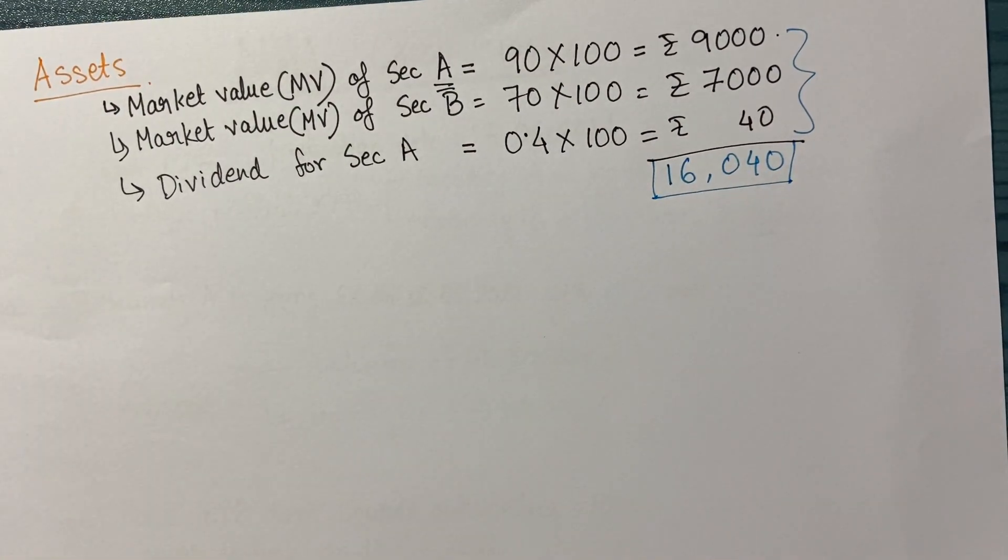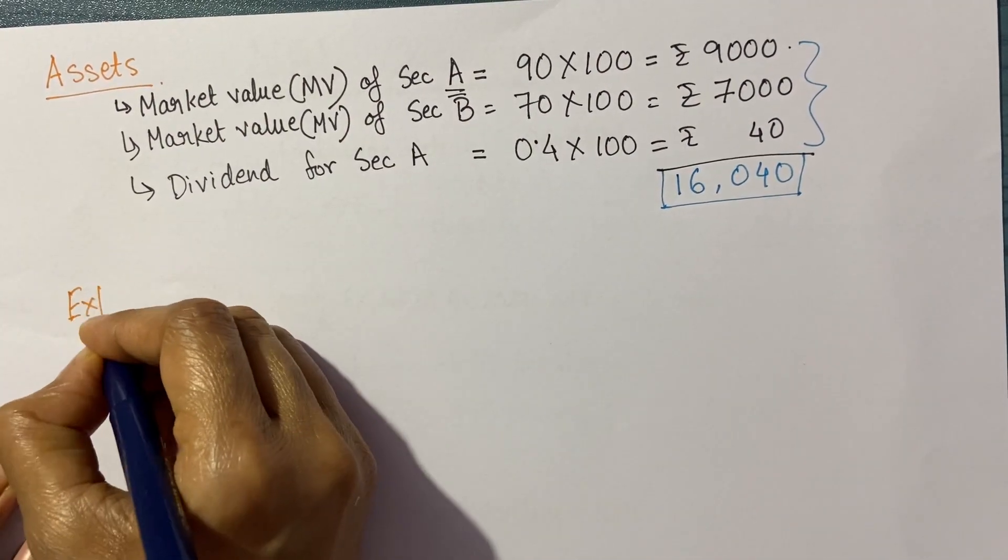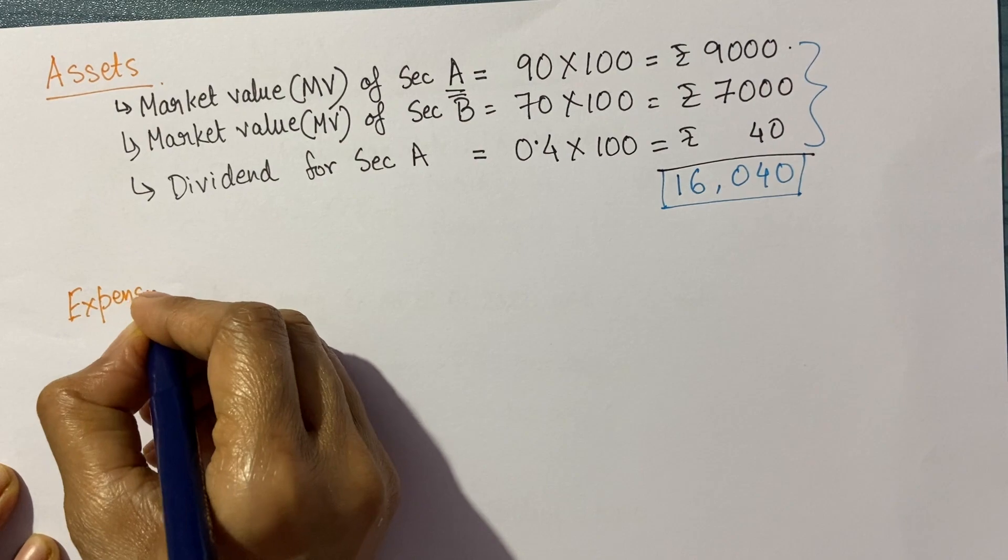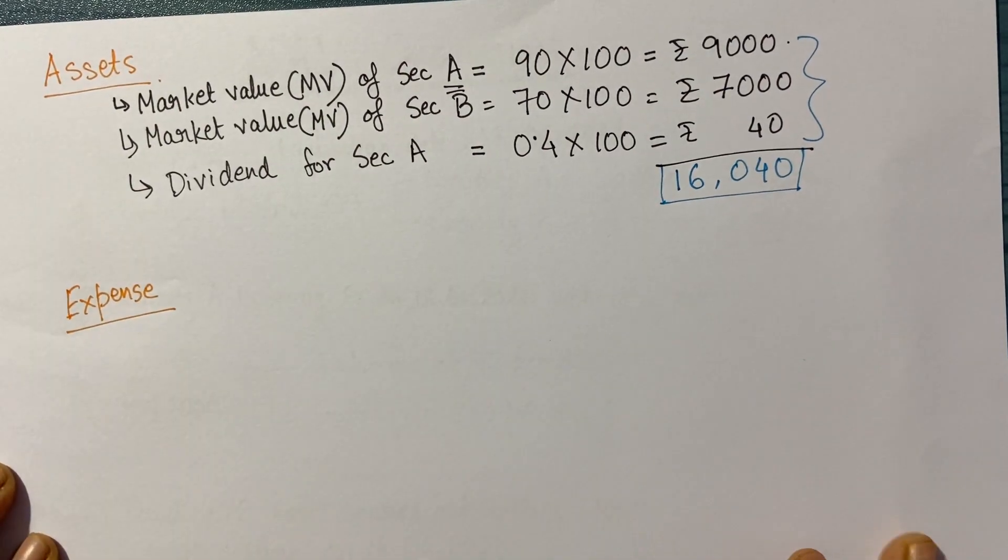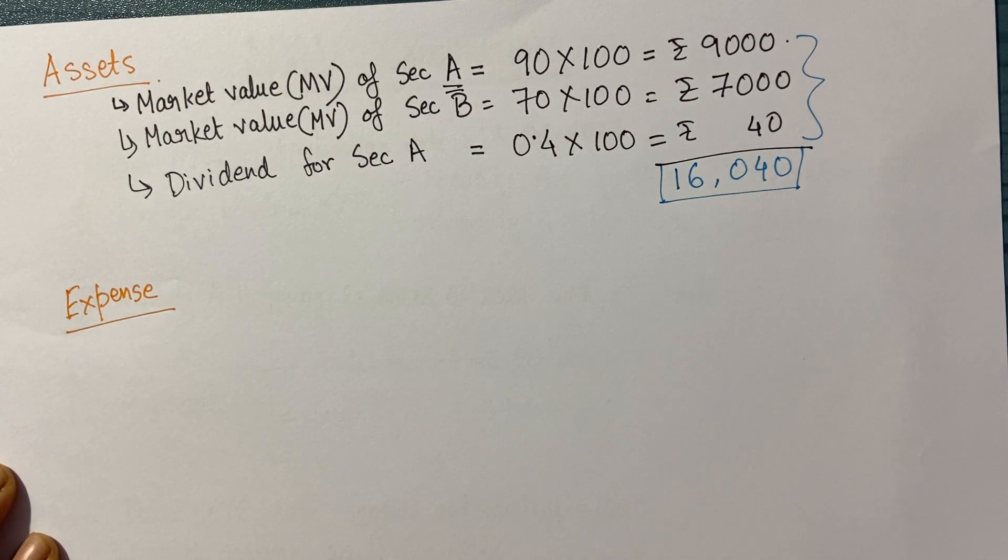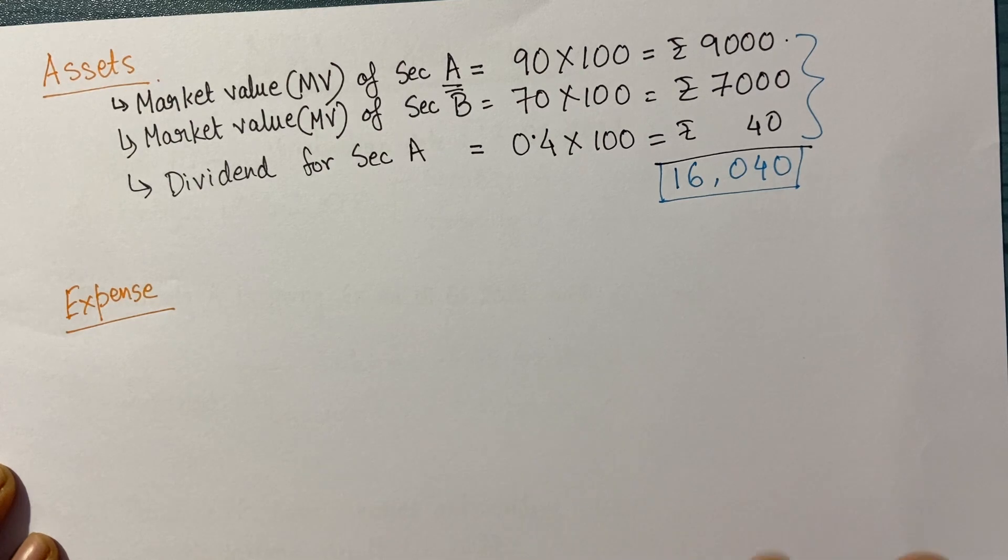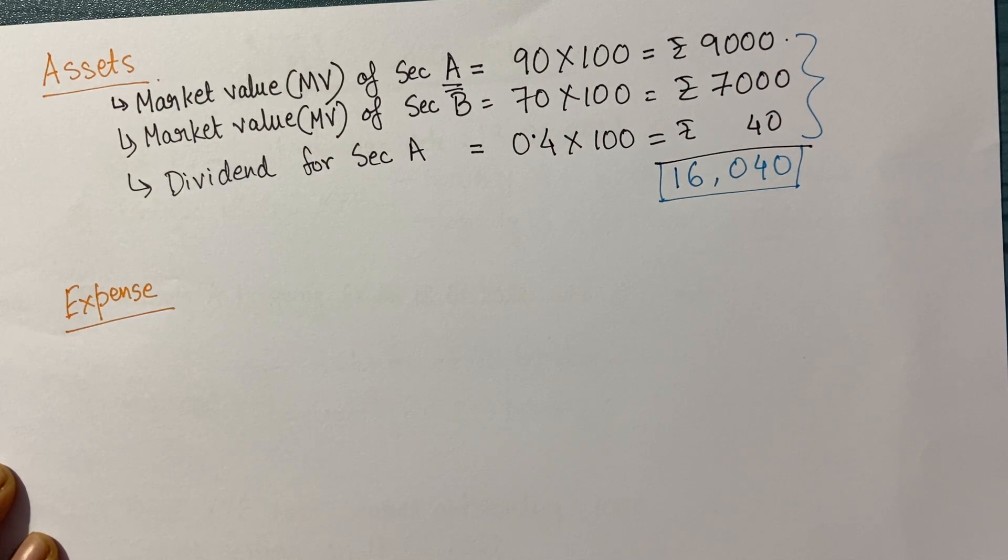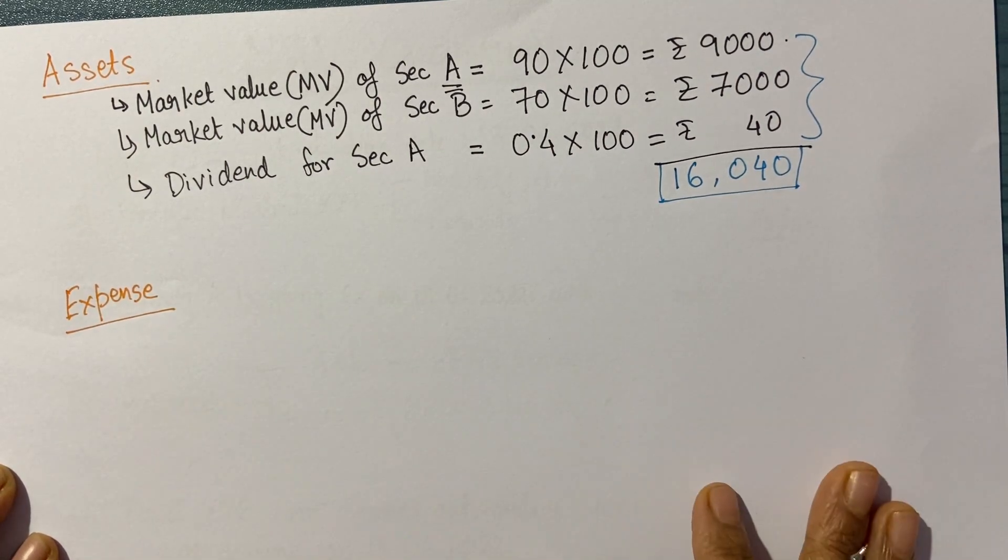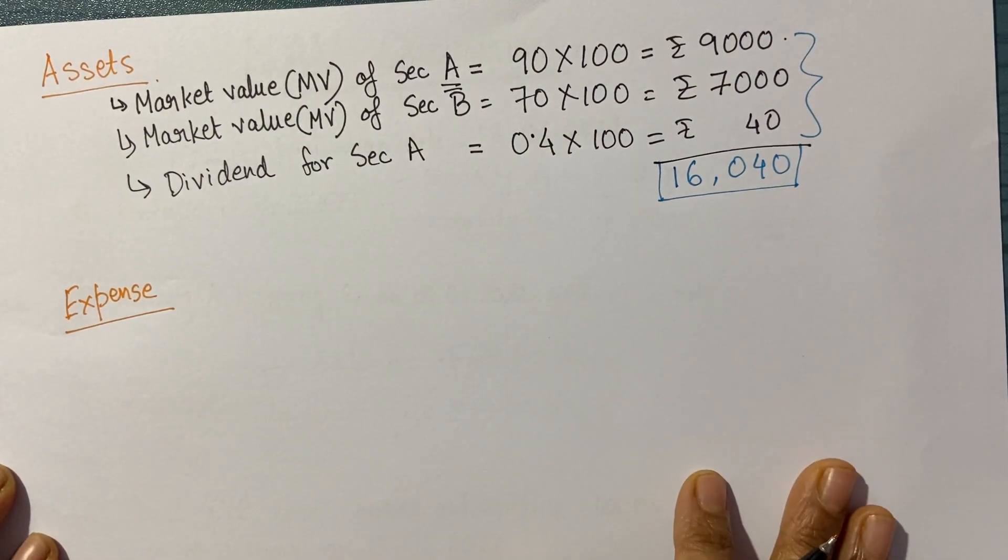The next component is expense, which we can also call liability. One more point to simplify this example: I'm assuming that on this particular day, 18th June, we didn't have any trades in the fund. You can comment if you'd like to see what happens when there's a trade in the fund, and I can create a separate video on this.